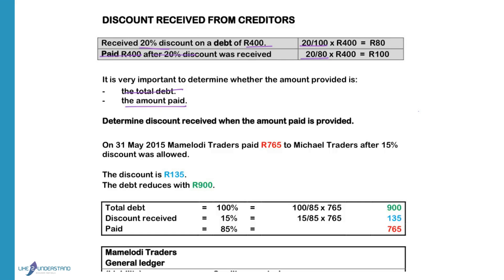Mama Lori Traders paid 765 Rand after a 15% discount was allowed. That means the total debt is 100% and the discount is 15%, so the amount paid was 85% of the total debt. They gave us the amount paid, so 85% equals 765 Rand.